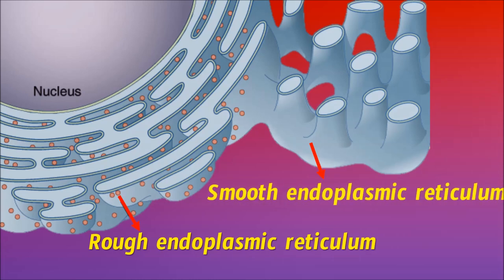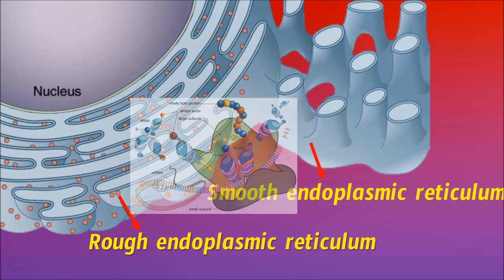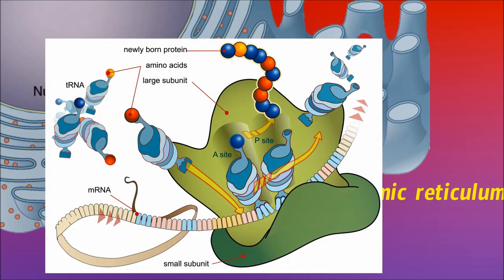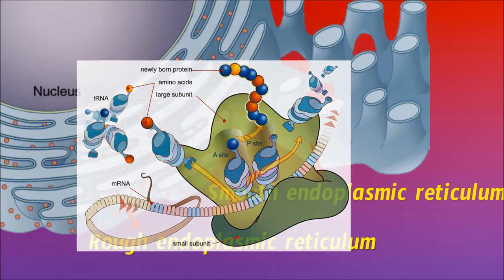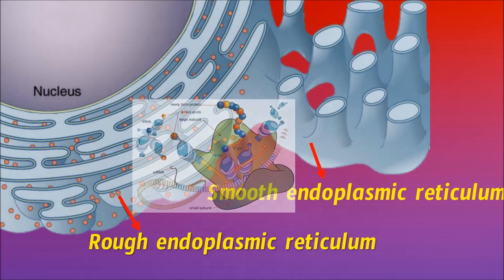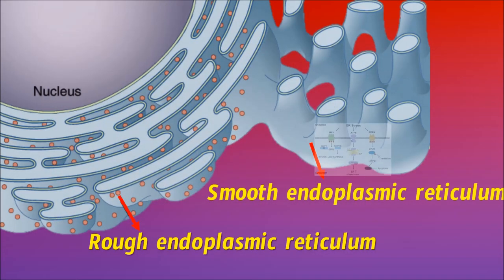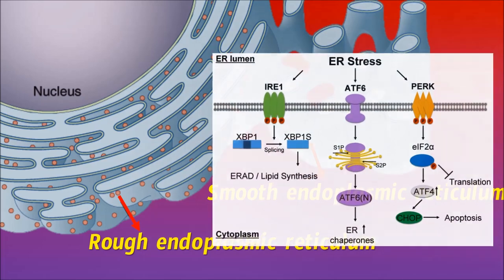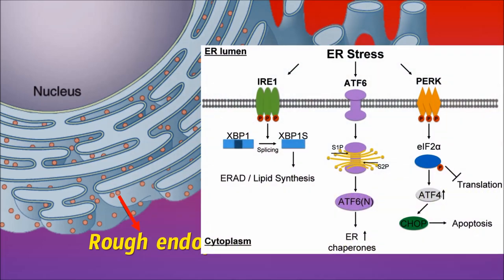Rough endoplasmic reticulum contains ribosomes on it and plays a major role in protein synthesis. Whereas the smooth endoplasmic reticulum participates in lipid metabolism, glycogenolysis, as well as detoxification.